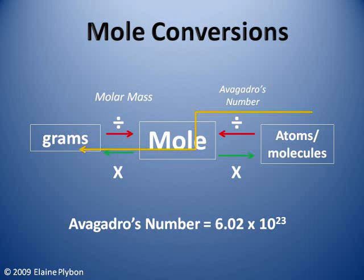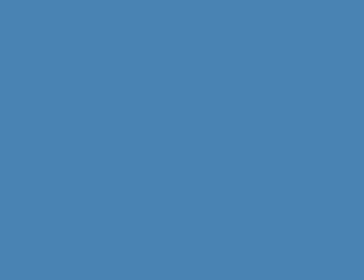Taking a longer stretch — going from atoms to grams — you'd have to first go through the mole: divide atoms by Avogadro's number, then multiply by molar mass to get to grams. Can you see it? Sweet.